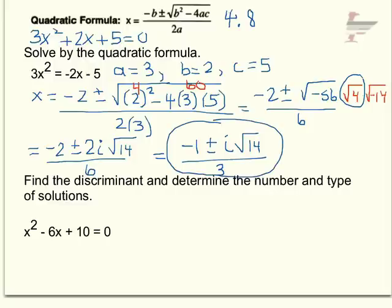Then the second problem says to find the discriminant and determine the number and type of solutions. And this very question, different numbers only, will be on the test. So make sure you understand the directions. The discriminant is b squared minus 4ac. No square root, don't square root that. I just want what that number is. So it's clear that a is 1, b is negative 6, and c is 10.